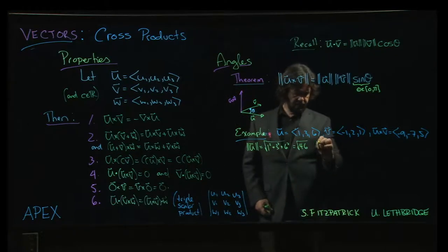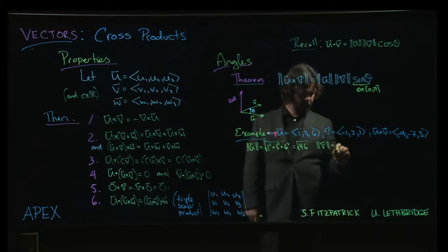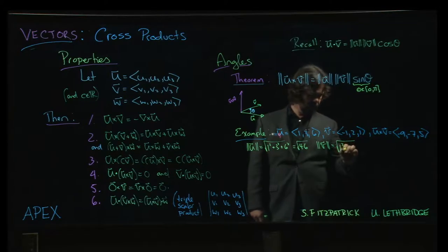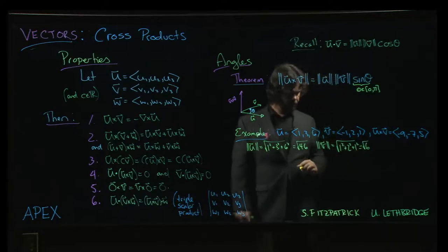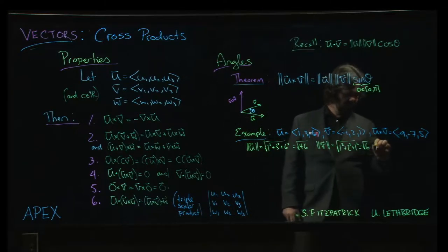The magnitude of v is going to be the square root of 1 squared, because the minus sign goes away, plus 2 squared plus 1 squared. That's just the square root of 6.